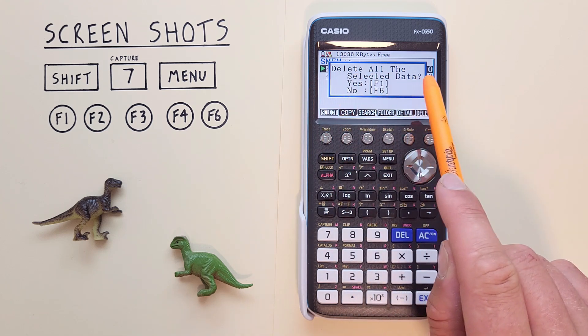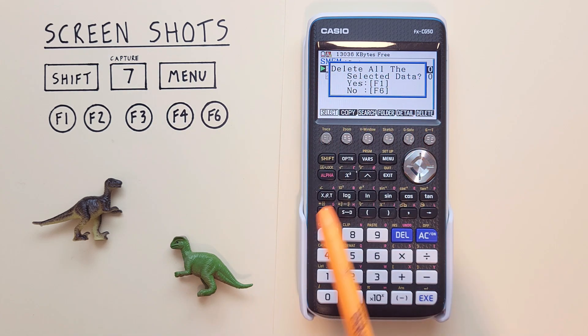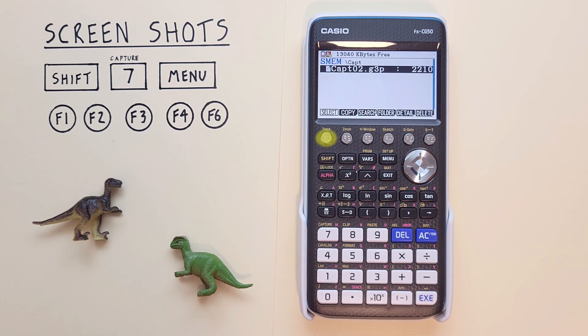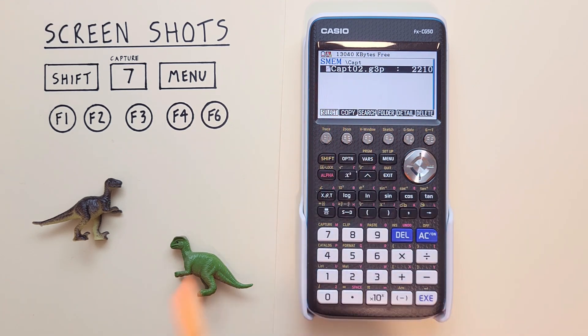It'll ask us to delete all selected data. We've selected the one we want to delete. So we hit F1. And that screenshot has been deleted. But we still have screenshot number two, our graph.